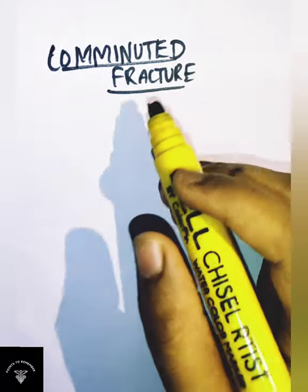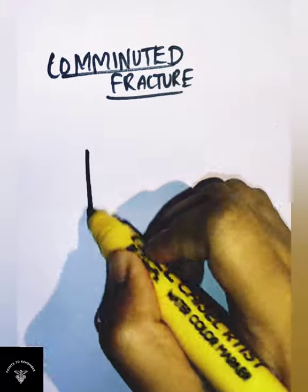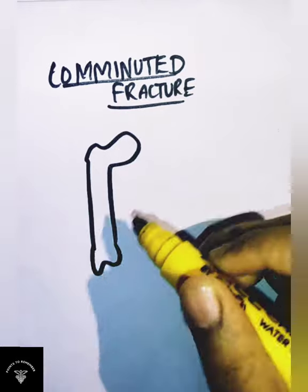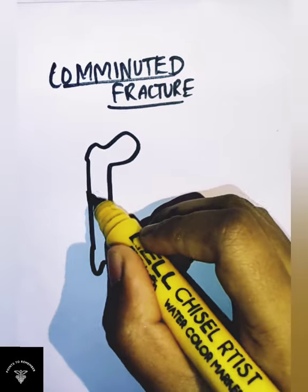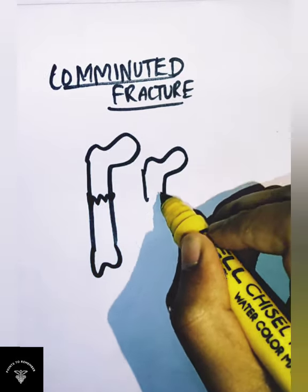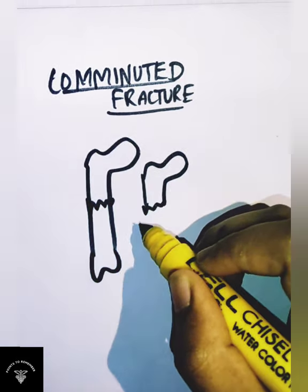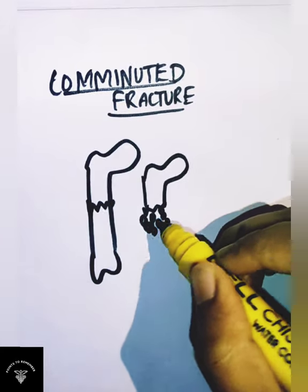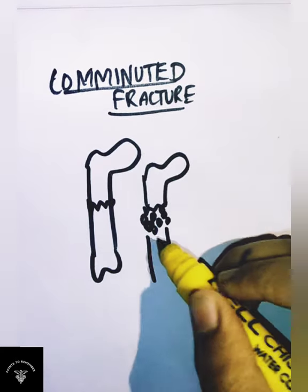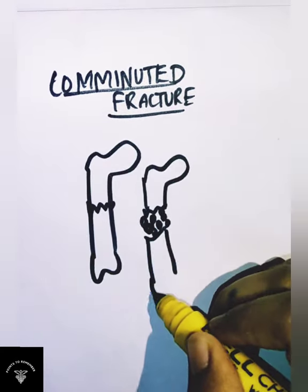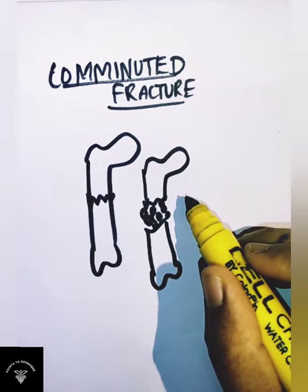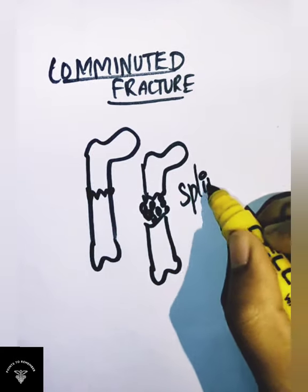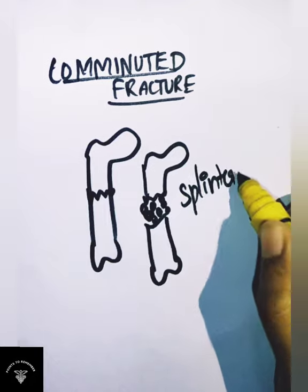Let's see about comminuted fracture. This is the fracture in which the break happens and there will be multiple bone fragments — that is, more than two fragments. The bone is broken into more than two fragments, meaning it is splintered or crushed.